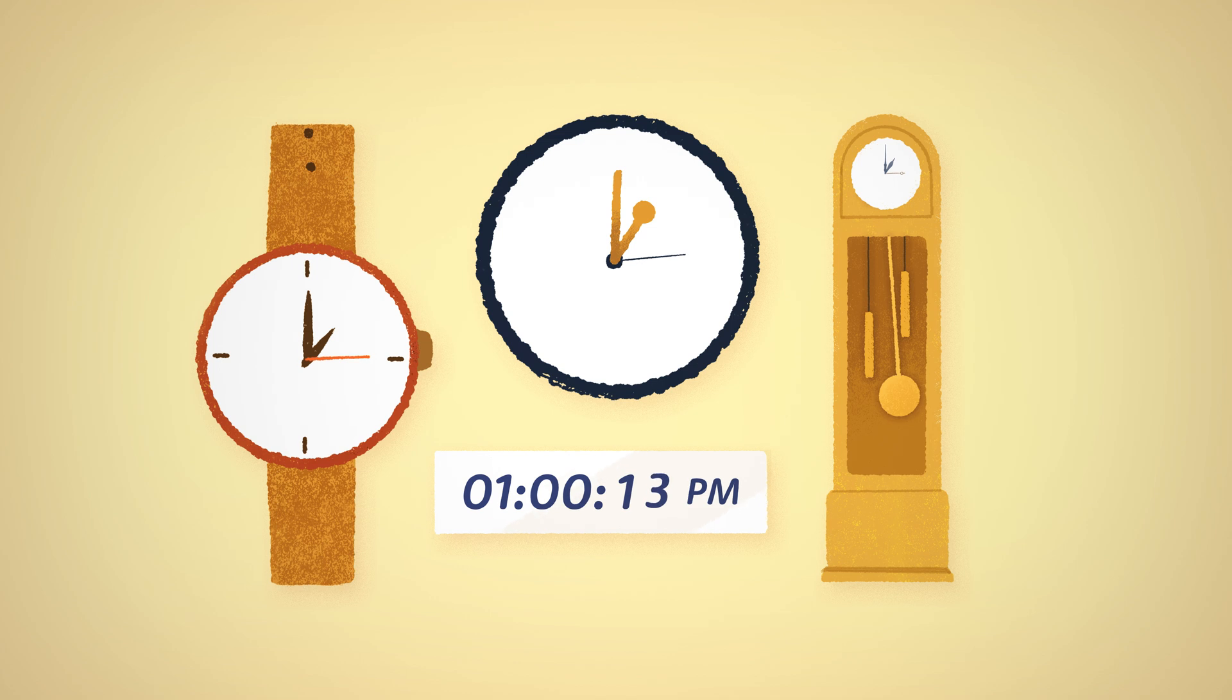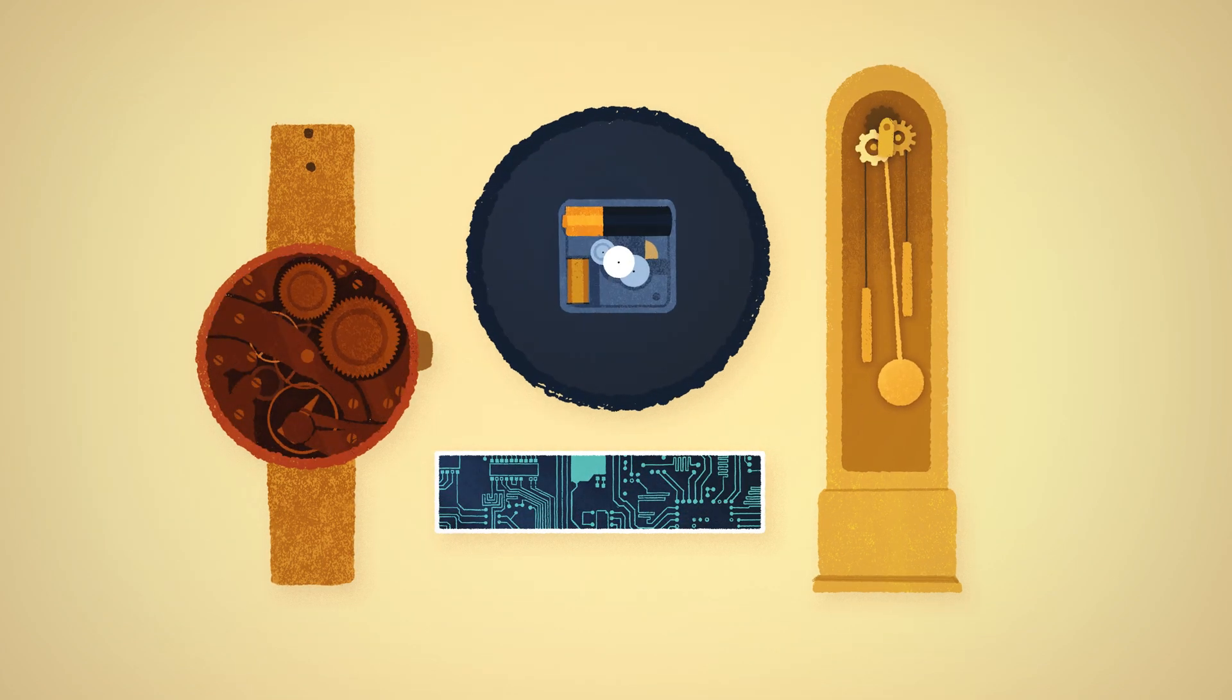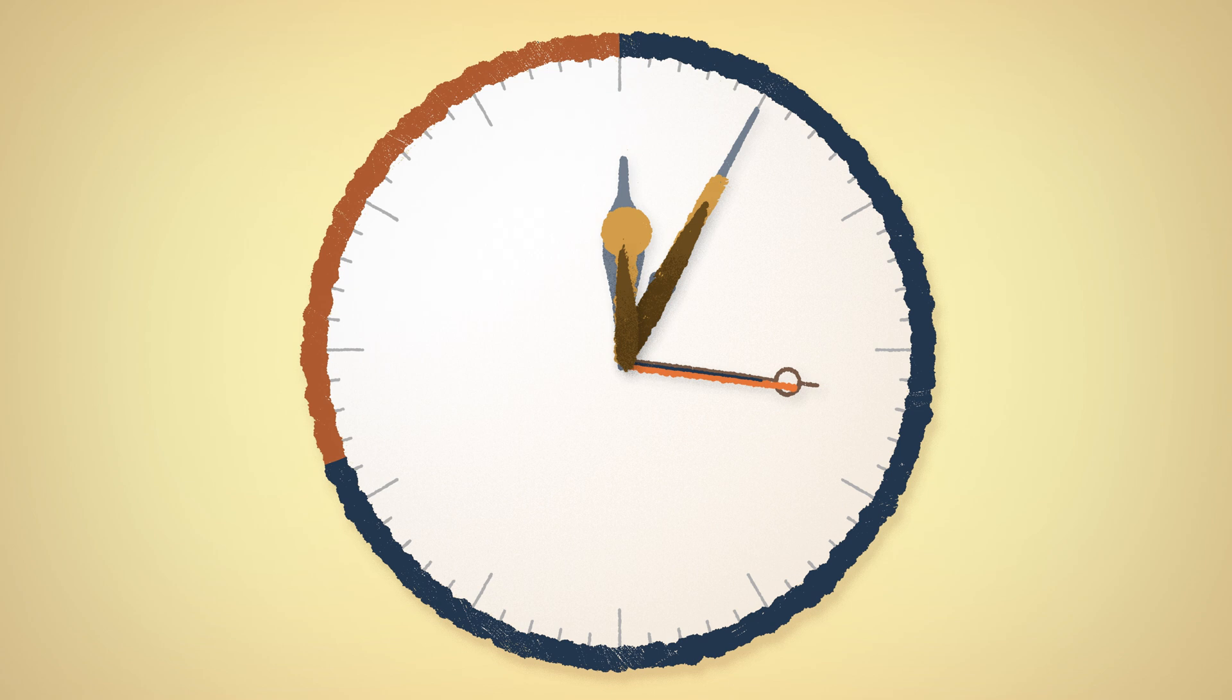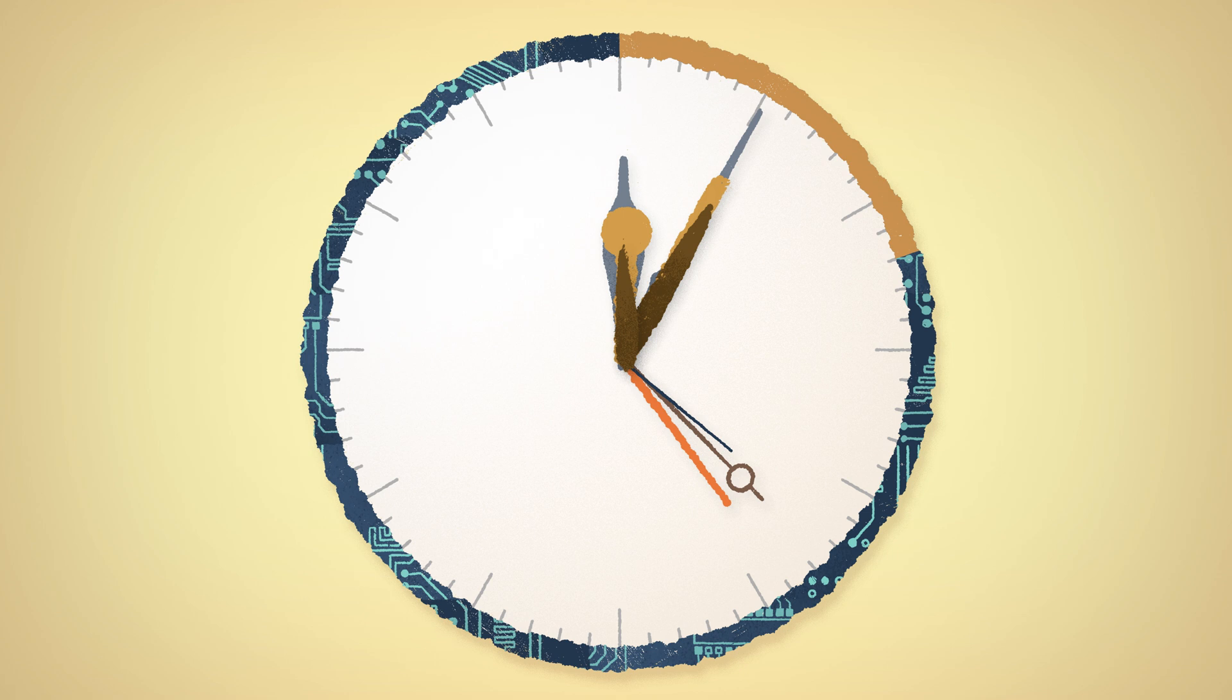Every clock has a mechanism that keeps a steady beat, like a pendulum or quartz crystal. Because humans make these objects, no two are exactly alike. The ticks they produce will always be a little bit off.